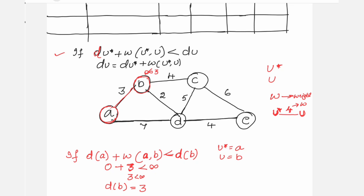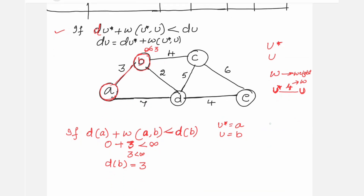Once B is finalized, u* becomes B in the next step. If you take C as the next vertex, then u becomes C. Previously A was u* and B was u; now B is u* and the next remaining vertex becomes u. You will now carry out: if d(B) + w(B, C) < d(C).